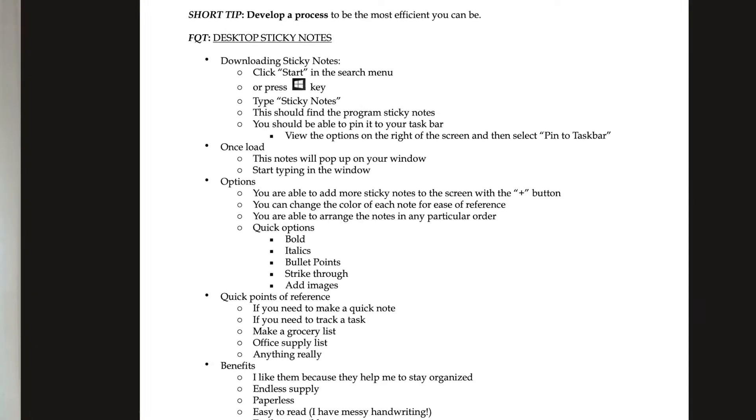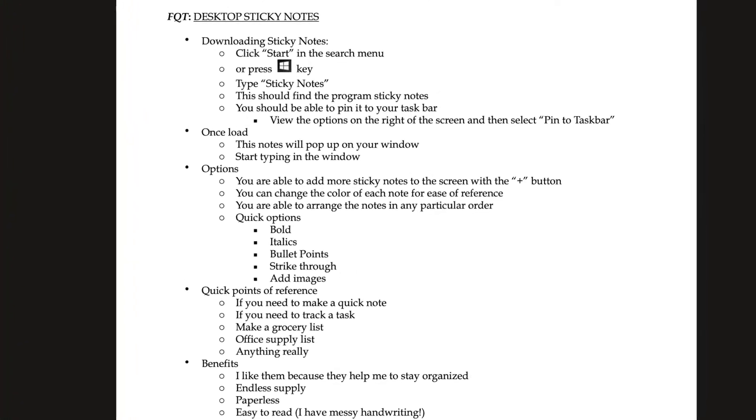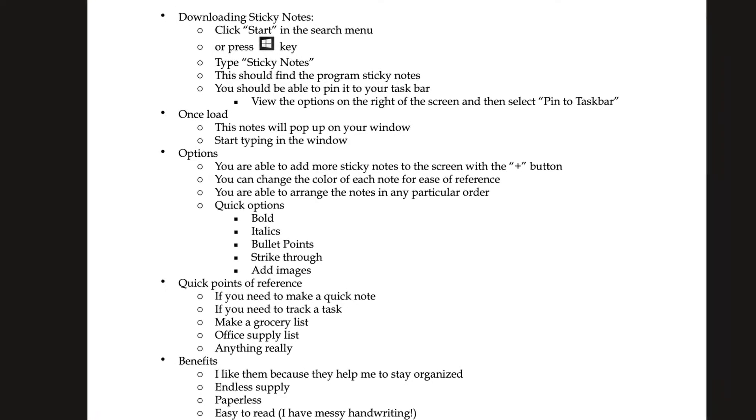Having multiple sticky notes is, of course, good. You can change the color and arrange them in any particular order — put them in a priority list that you want. It's just free flow. The quick options at the bottom are bold, italics, bullet points, strikethrough, and add images. Making sure this is quick, easy, and accessible, but not too complicated so you don't get overrun with options.